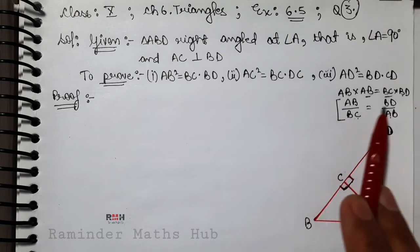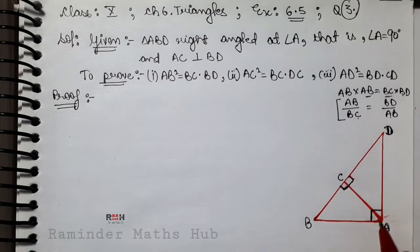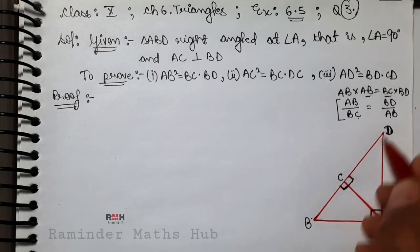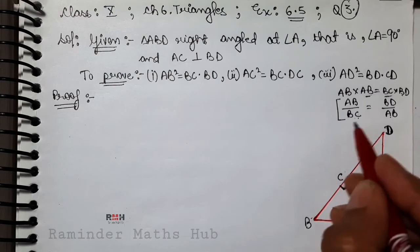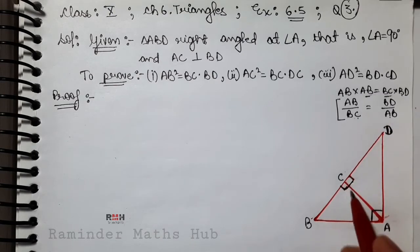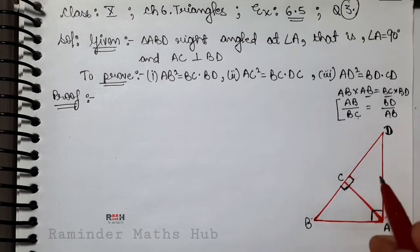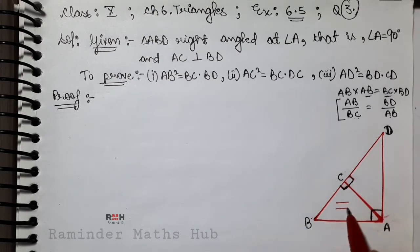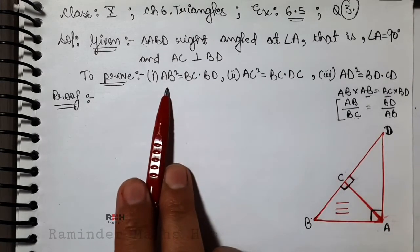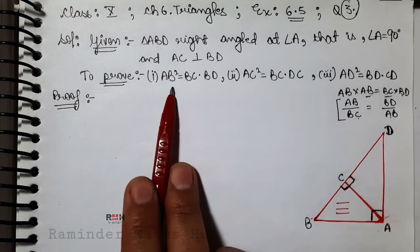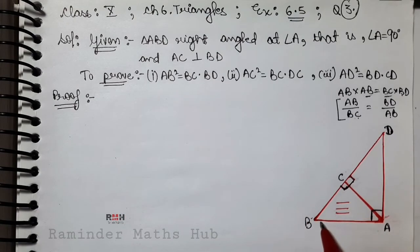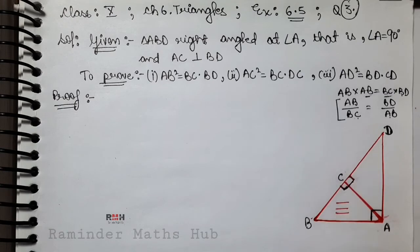हमें similar prove करना होगा - ऊपर है AB और BD, तो AB और BD से बनने वाली triangle है ABD। इसको similar prove करना होगा BC और AB वाली triangle को। AB का square है means AB side दो बार include हुई, तो दोनों triangles जो AB से बनती हैं: एक छोटी triangle ABC और एक बड़ी triangle ABD।